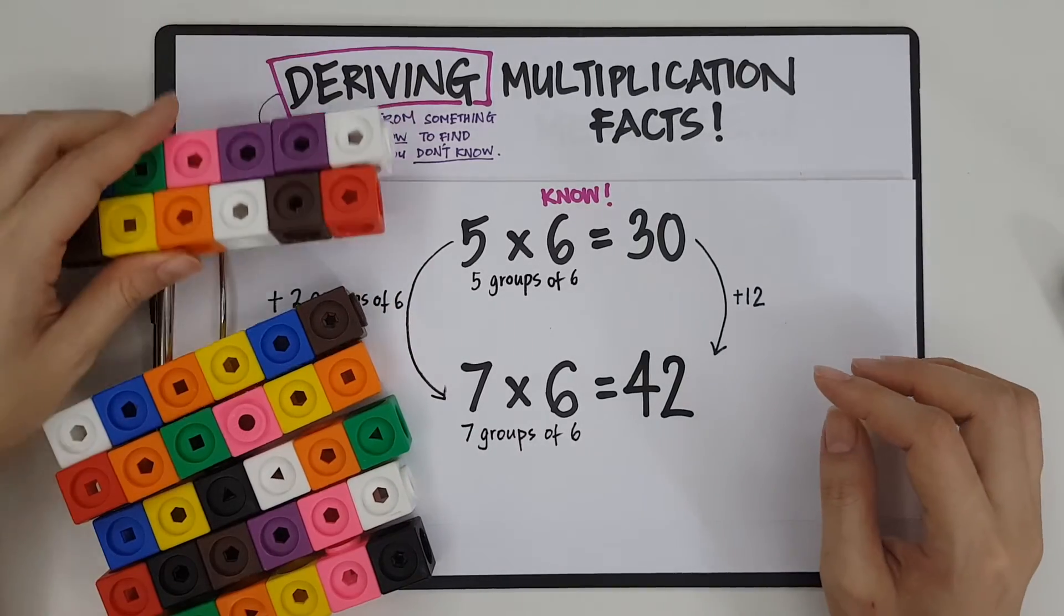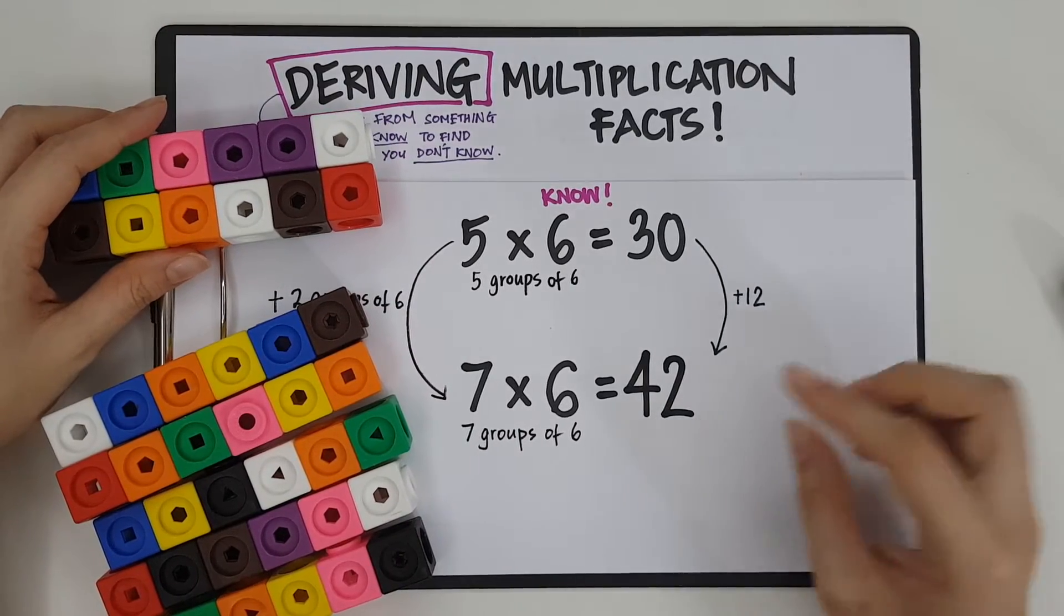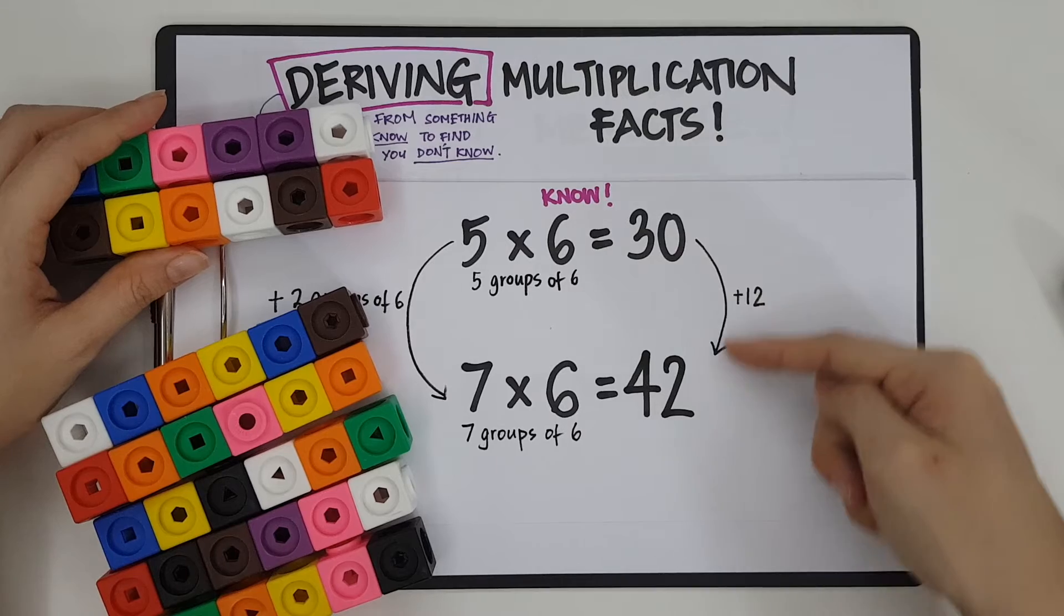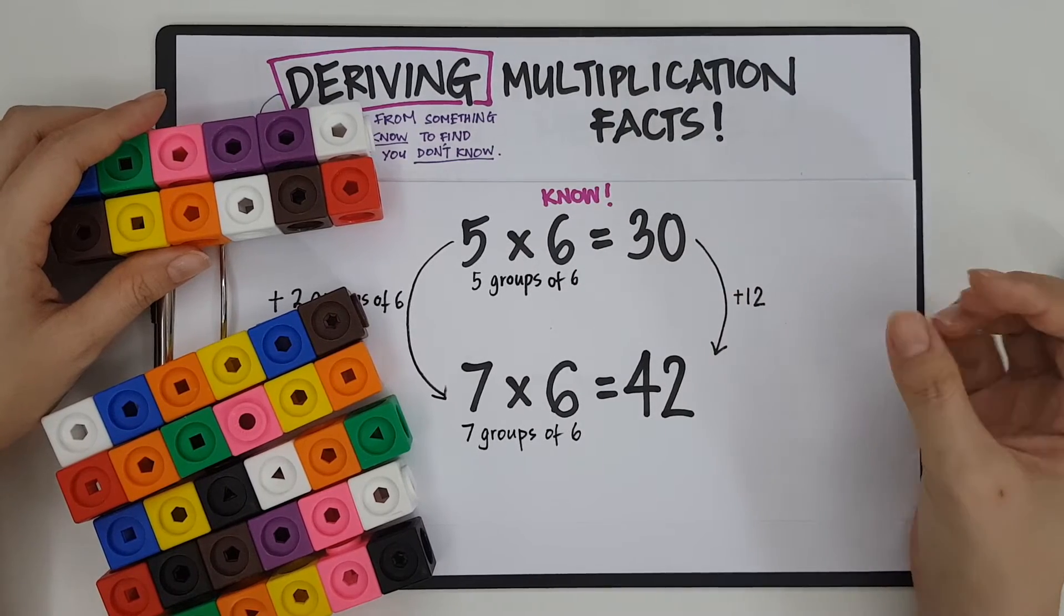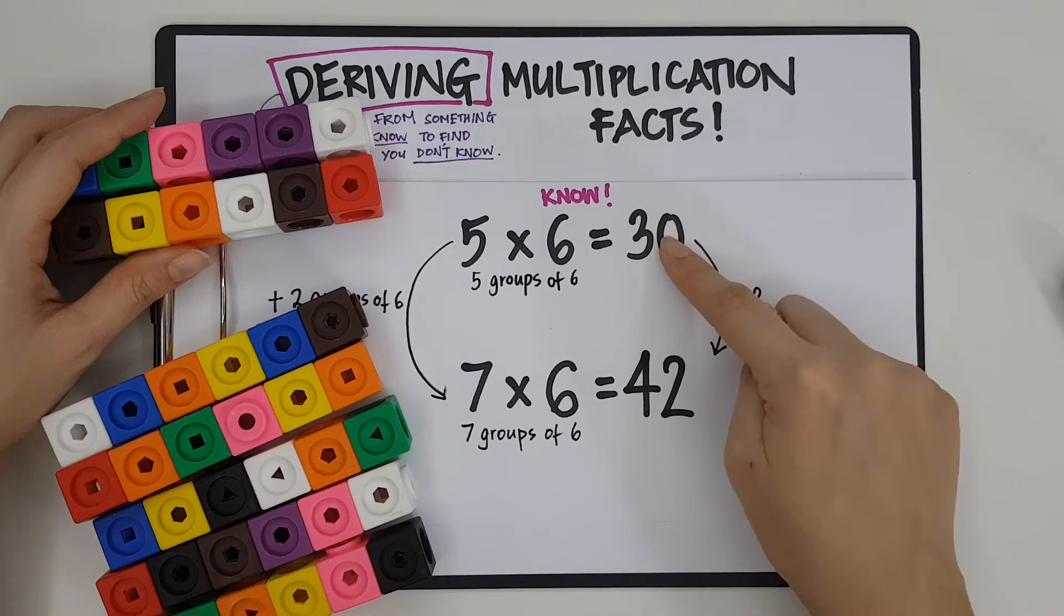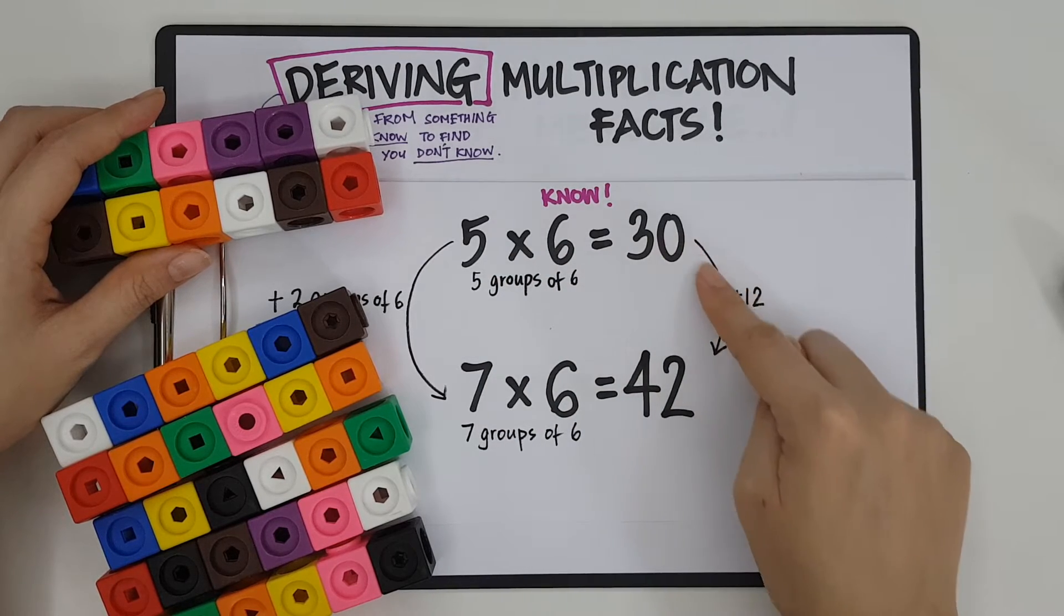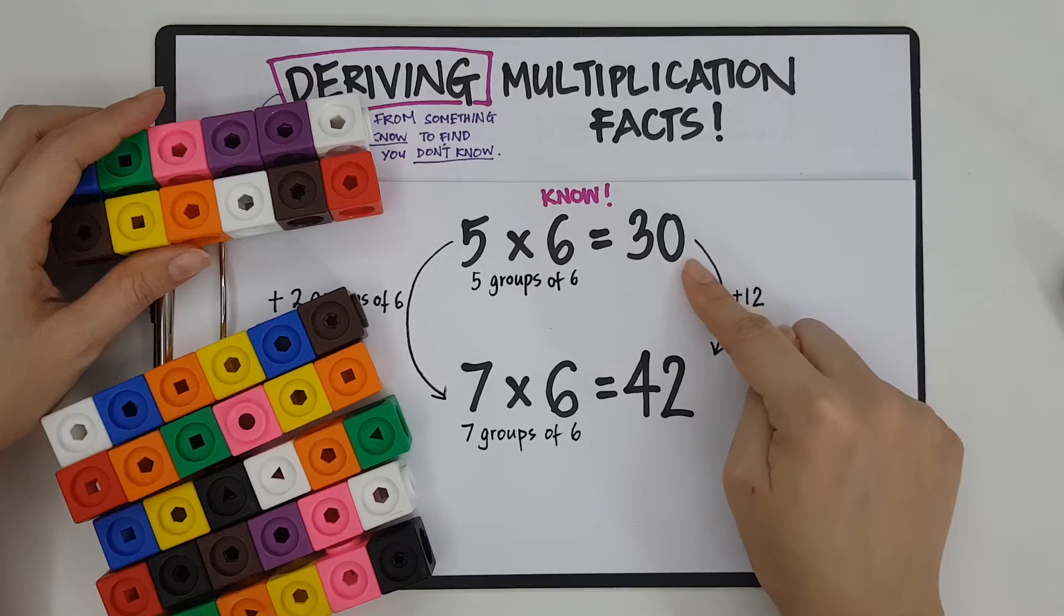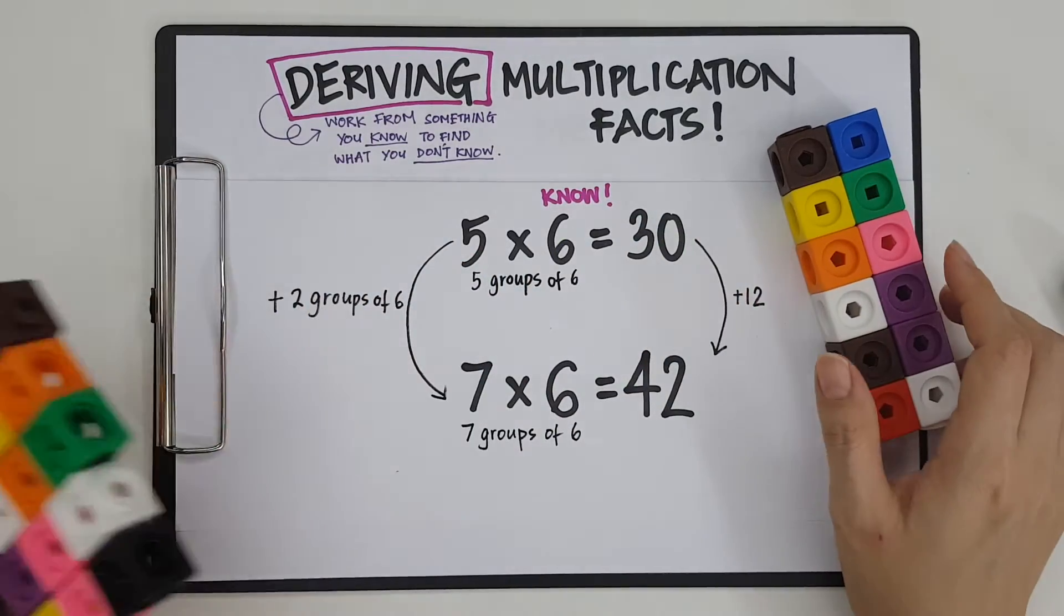Now at the beginning, you're going to be doing this a bit slower. Yes? But as you get the hang of it, it's going to come to you naturally and faster and more quickly how many groups we are adding. I'm adding 2 groups of 6. So 2 groups of 6 is 12. And I'm just going to add 12 to what I already know.